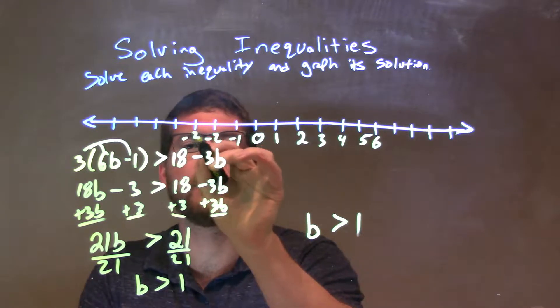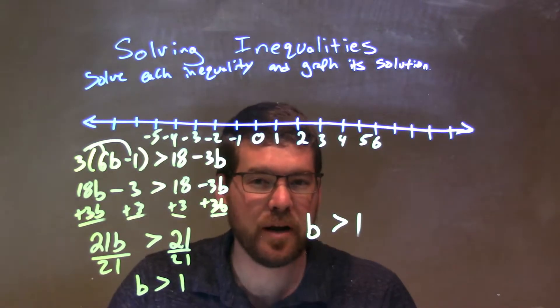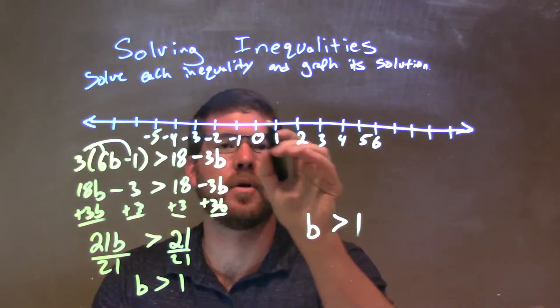Negative 1, negative 2, negative 3, negative 4. That's good. Well, since b is greater than 0, but not equal to 0, right? It's just greater than 0. We put an open circle.